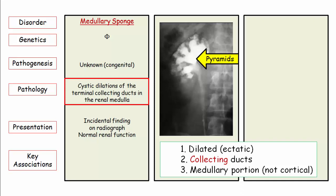When you see the phrase "cystic dilation of the medullary collecting ducts" they are describing medullary sponge kidney. The key components to emphasize are dilated collecting ducts in the medullary portion, which should be easy to remember as this is called medullary sponge kidney. This is the language of MSK. On the USMLE this description is most often seen as a distractor with one notable exception.